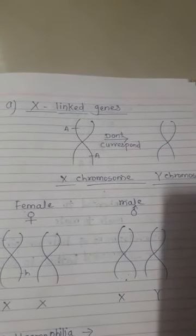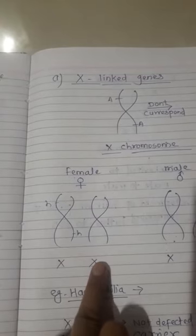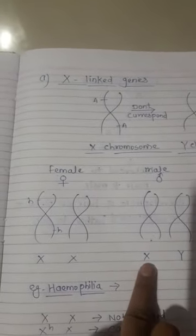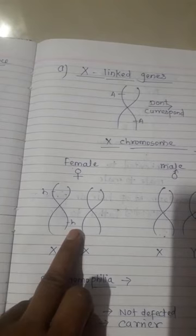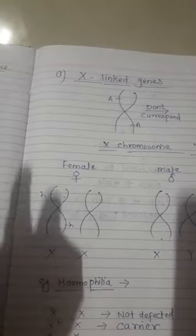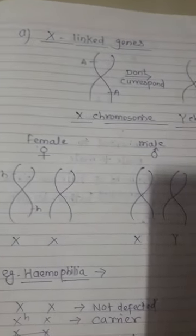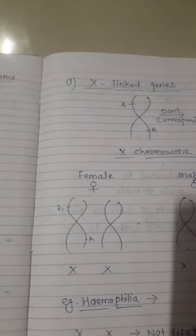The female has two X chromosomes, and the male has one X chromosome and one Y chromosome. In females, two recessive sex-linked genes are required for expression of sex-linked traits. If only one X chromosome carries a recessive gene for a sex-linked trait, its effect is suppressed. Take the example of hemophilia on the X chromosome.